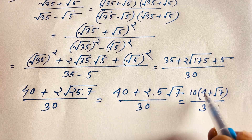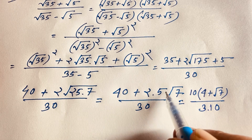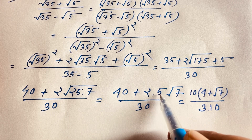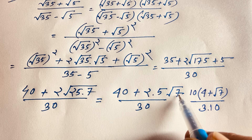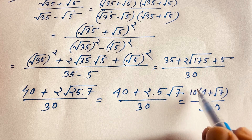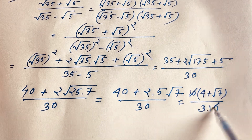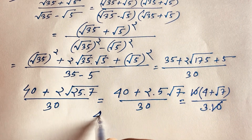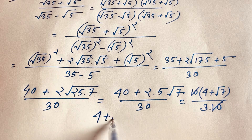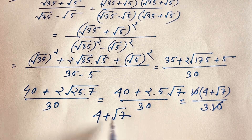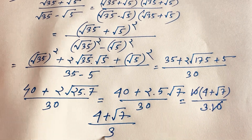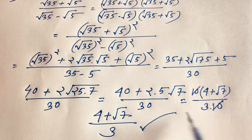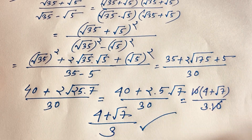Factoring out 10: 40 divided by 10 is 4, and 10 square root of 7 divided by 10 is square root of 7. The denominator is 30, and 30 divided by 10 is 3. So we find our final answer: 4 plus square root of 7 over 3. This is our final answer.